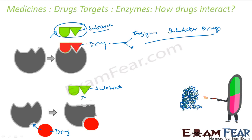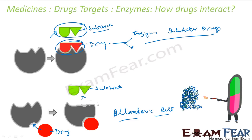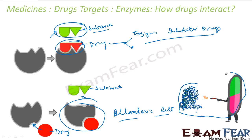So there are two ways drugs target enzymes: one is competitive inhibition, where the drug competes with the natural substrate for the binding site; the second is attachment to the allosteric site, which changes the shape of the enzyme and makes it non-functional. Note that if the enzyme forms a very strong bond with the drug that cannot easily be broken, the body will discard that enzyme and a new enzyme will be created.